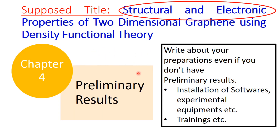Chapter four is about preliminary results. The results should relate to structural and electronic properties. If you have just started your studies and don't have preliminary results yet, you should write about your preparations — for example, installation of software, experimental equipment, trainings you are acquiring, or your learning about different methods.